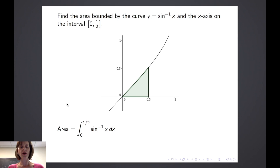Recall that the area under a curve can be found using a definite integral, so we'll take the integral from 0 to 1 half of the inverse sine of x dx. Now this is not one of the basic forms of integrals that we know, so we are going to try using integration by parts. Recall we need to make a selection for u and the rest of it becomes dv, or we make a selection for dv and the rest of it becomes u.